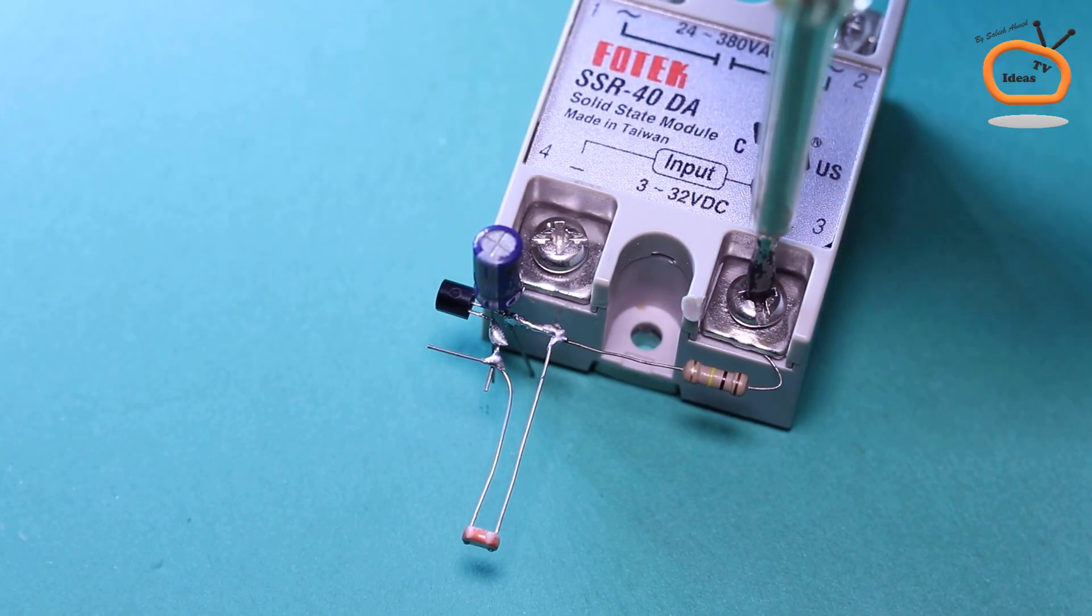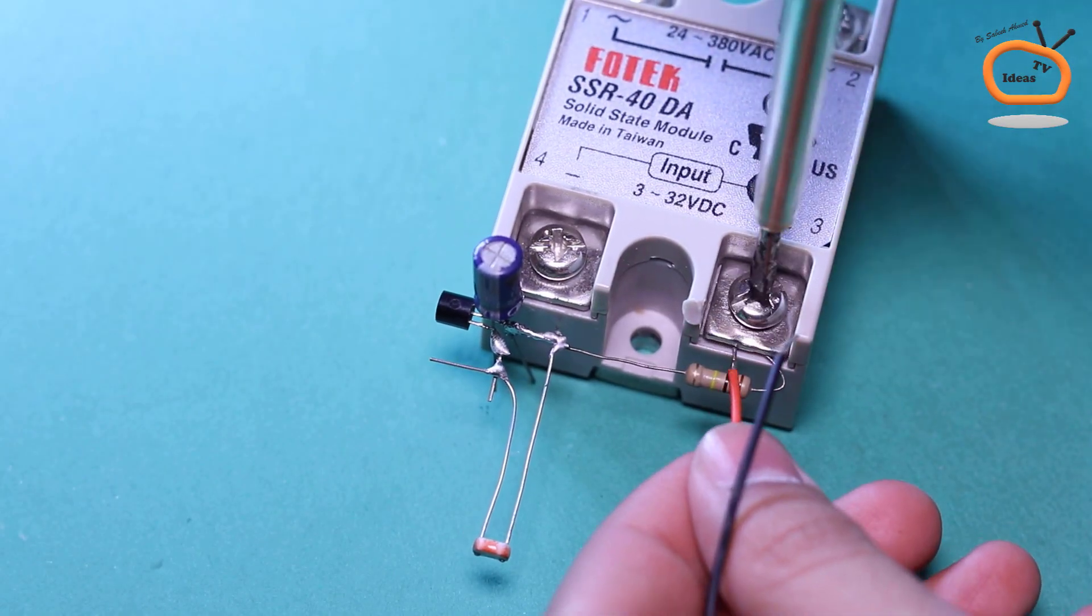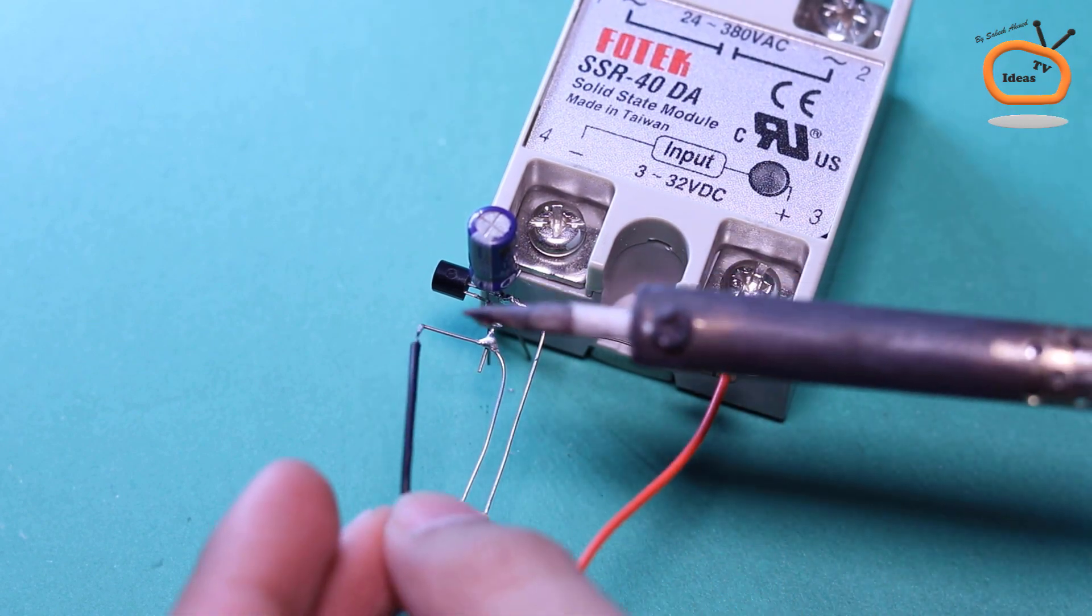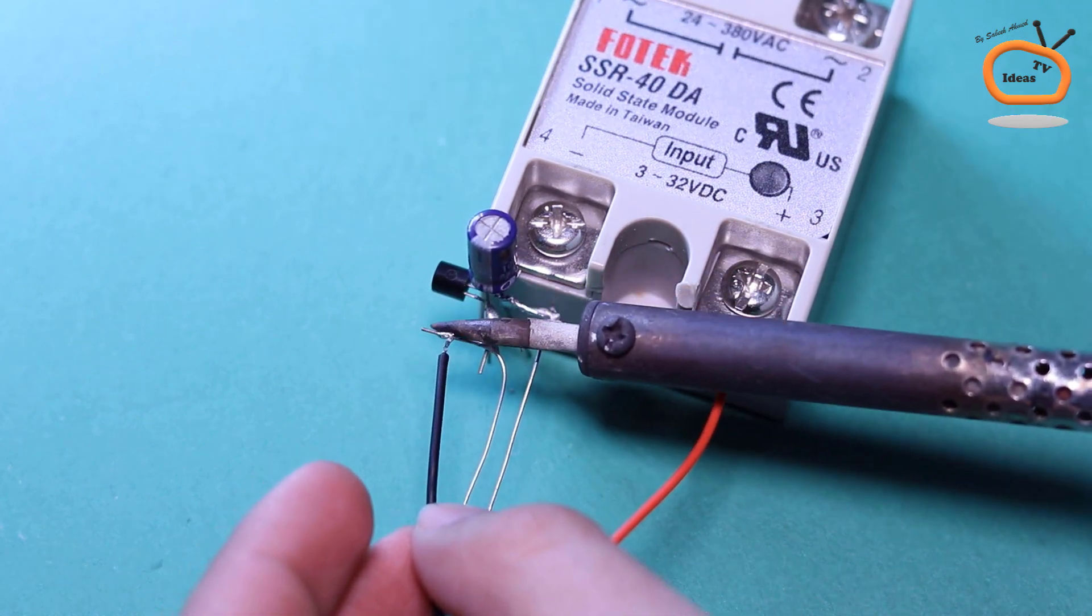Now connect a 9V battery connector as shown. Positive wire with the positive terminal of relay and negative wire with the emitter.